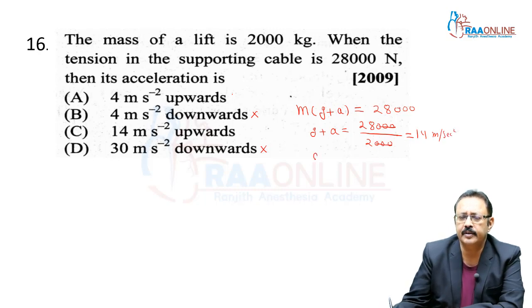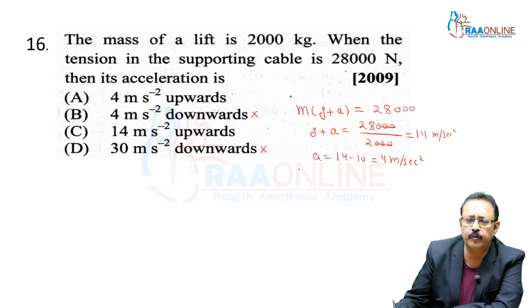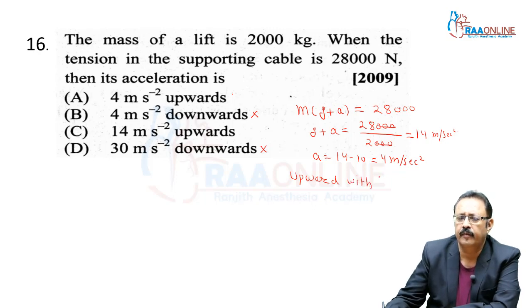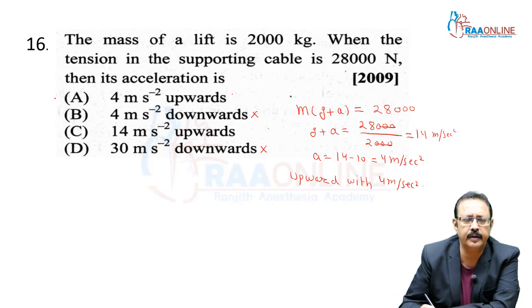But g is 10. So what is a? a = 4 m/s². It means the lift is moving upward with 4 m/s². So we are going with option A.